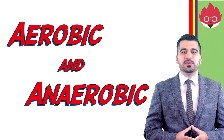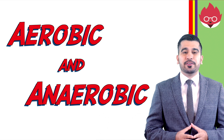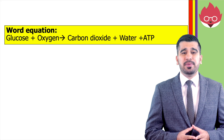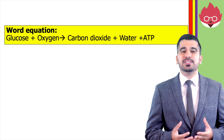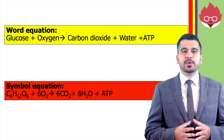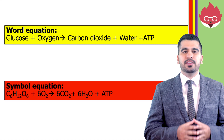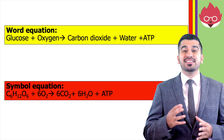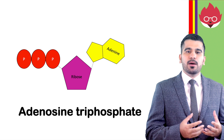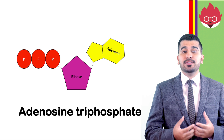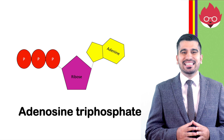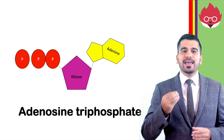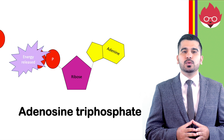There are two types of respiration we'll be looking at: aerobic and anaerobic respiration. Aerobic respiration occurs in organelles called the mitochondria. The word equation is: glucose plus oxygen produces carbon dioxide, water, and ATP. The symbol equation is: C6H12O6 + 6O2 → 6CO2 + 6H2O + ATP. When the bonds are broken in glucose, the energy released is transferred to assemble a molecule called ATP — adenosine triphosphate — the universal energy carrier and short-term energy store in biological systems.